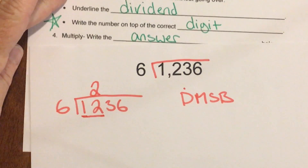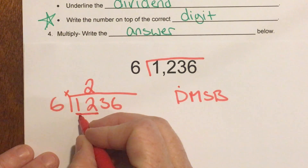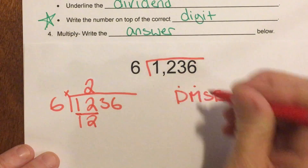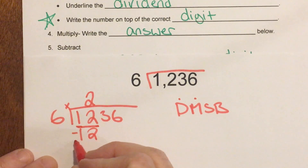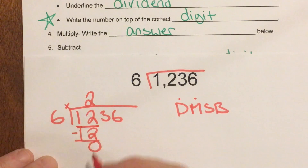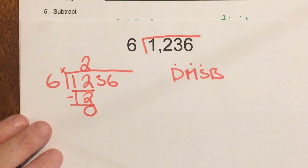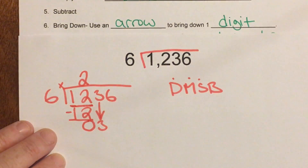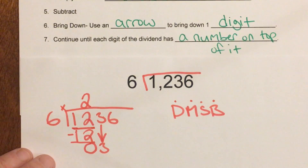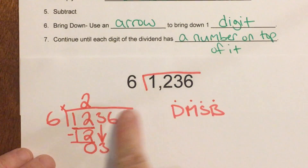Now mommy — multiply. Two times six is 12. That's mommy. Now sister — subtract. 12 take away 12 is zero. Now brother — bring down one digit using an arrow. I'm not done yet — I have to keep going back through daddy, mommy, sister, brother.